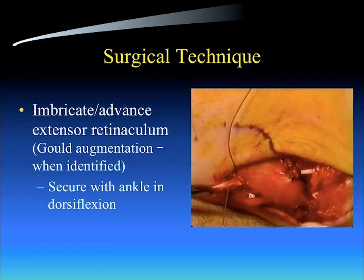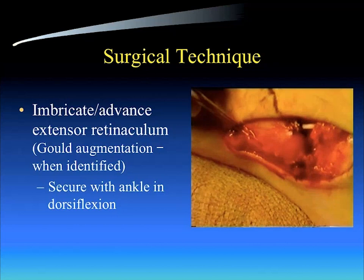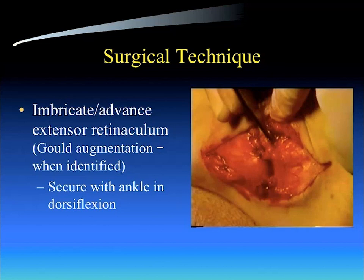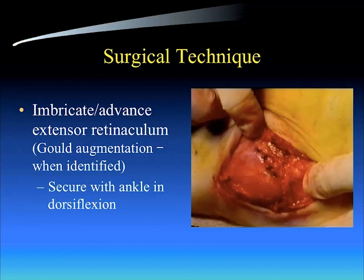Once that's done, you go ahead and advance your extensor retinaculum as described by Gould. You can identify it and advance it. You see us basically taking the slip of the peroneus brevis out of the posterior aspect of the fibula and securing it there with another suture as a fail-safe. There's the retinaculum being advanced as described by Gould, all done with the ankle in dorsiflexion and eversion. Very nice and secure.